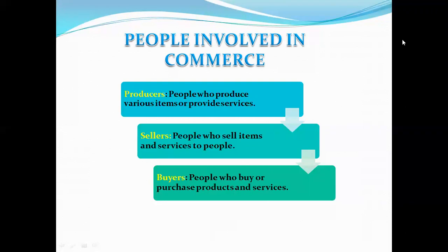The third and last is the buyer — the one who pays for purchasing those items, goods, services, etc. For example, a farmer who is growing crops is a producer. He produced those crops, those vegetables. Later on, he sold them to a shopkeeper on our street. So the producer was the farmer, and the shopkeeper who now has those vegetables is the seller.